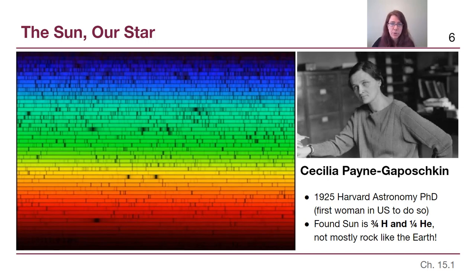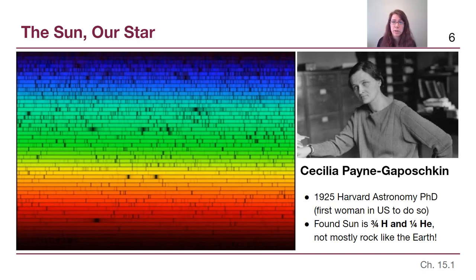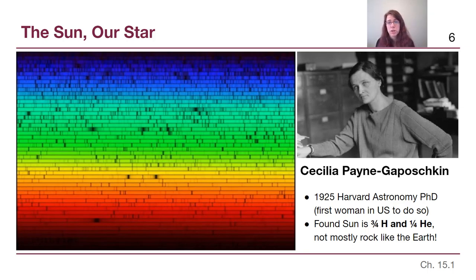We saw the absorption spectrum picture in chapter five, both in the textbook and lecture videos. What we didn't talk about was the fact that some of those lines are wider than others, and some are darker than others. It actually takes complex physics to use the strength of those absorption lines to determine how much of each element is present. We can use how dark, how deep, and how wide those lines are to figure out how much of each element is there.